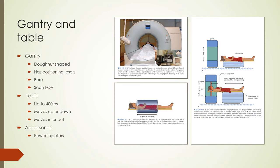Modern CT scanners have a donut-shaped gantry equipped with laser lights and button controls to raise and lower the patient table and move it in and out of the scanner. The controls are also available to the operator in the control room. Patient tables can support up to 400 pounds, though higher-weight-limit tables are available. The scan field of view is a circular region in the x-y plane, between 50 to 70 centimeters in diameter, with the z-axis parallel to the cranial-caudal direction.